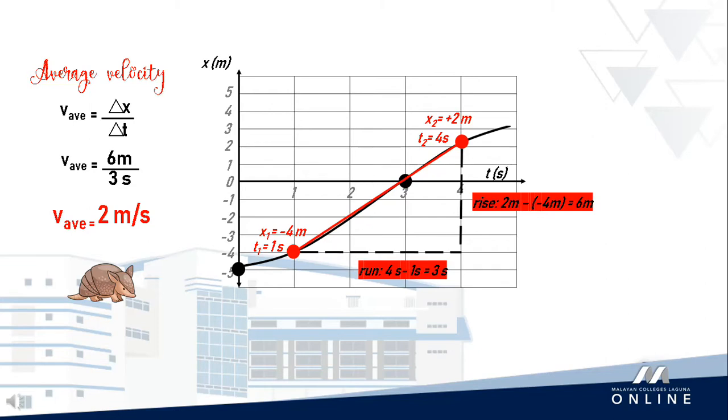Average speed, on the other hand, is a different way of describing how fast a particle moves. Remember that the average velocity involves the particle's displacement, while the average speed involves the total distance covered.